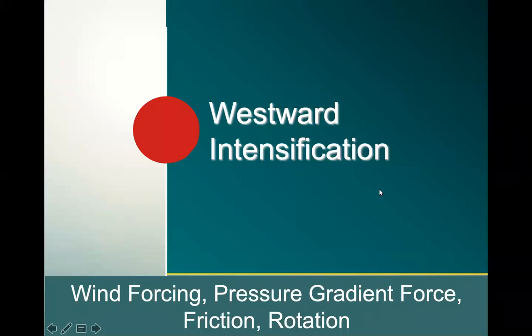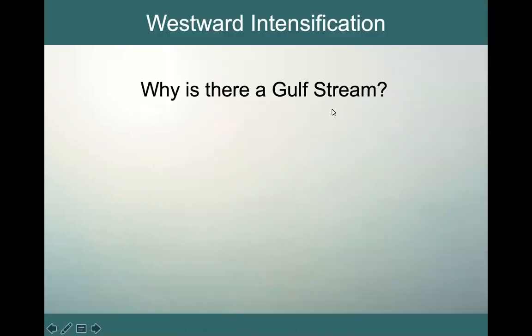These are things we're already familiar with. The reading for this is chapter four, section 4.2.2: 'Why is there a Gulf Stream?' And that is the question we are going to try to answer — why is there a Gulf Stream? Why do we have this westward intensification?